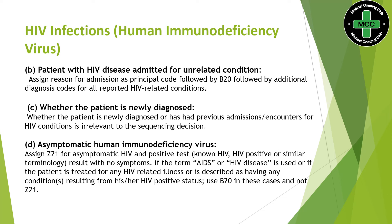Next: patient with HIV disease admitted for an unrelated condition. If the patient is seen for an unrelated condition — like a fracture — which is nowhere related to HIV, the reason for encounter should be sequenced first. We give first priority to the unrelated condition, then secondary we code B20.